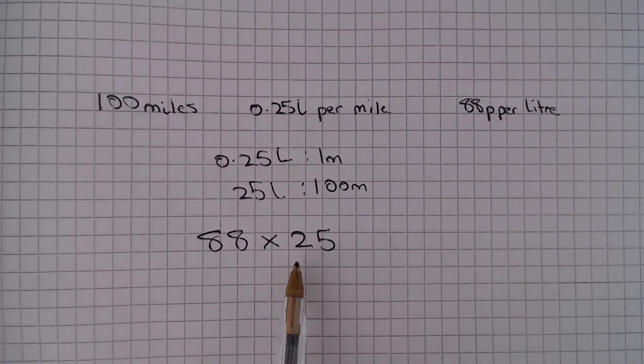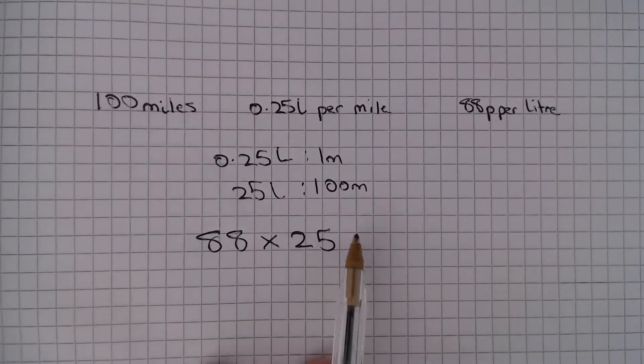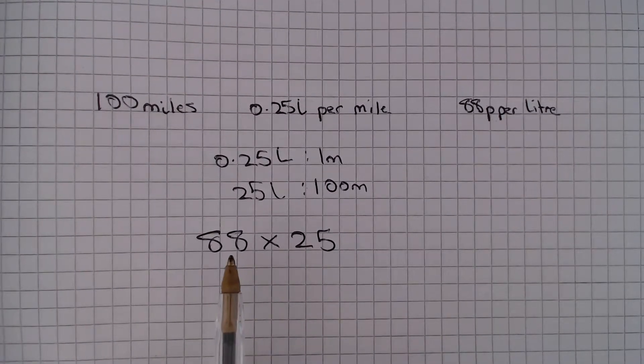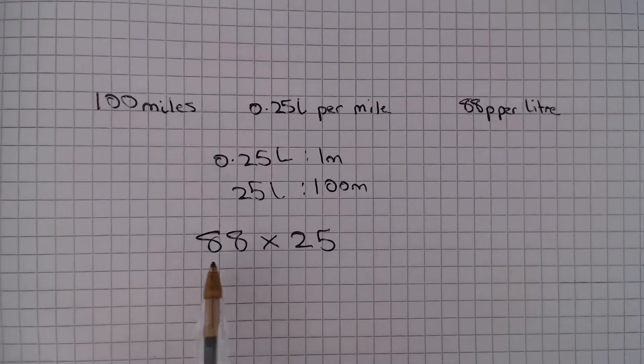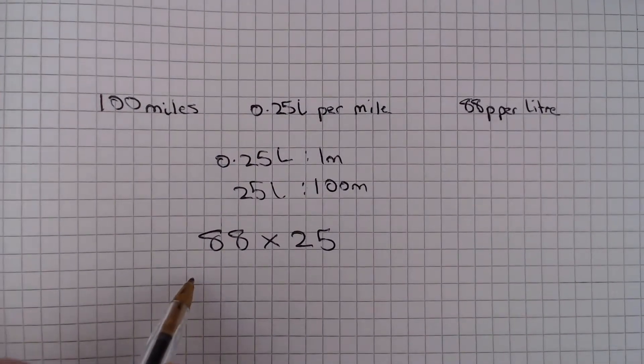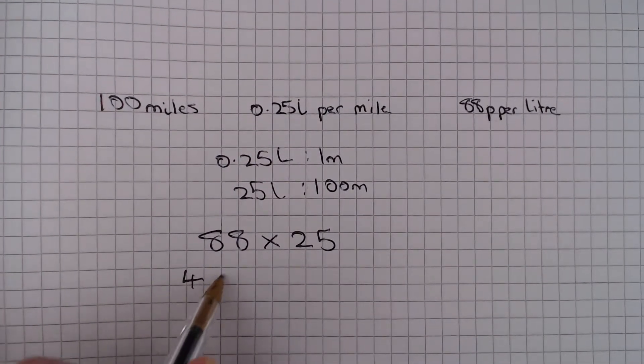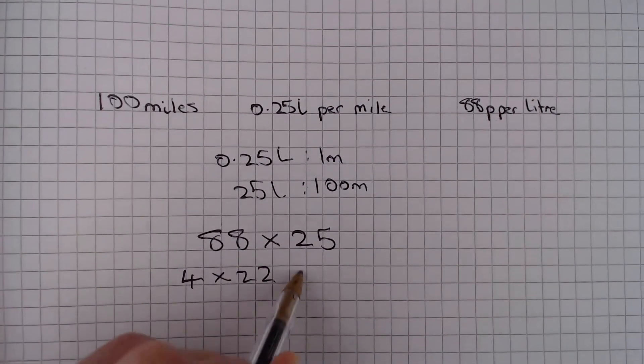Whenever you see a multiplication involving a 25 and a multiple of 4, I would always recommend splitting this up into a multiple of 4. So we know that 88 is 4 times 22.